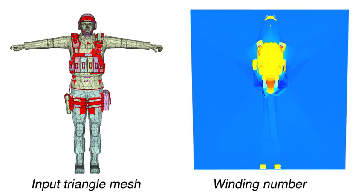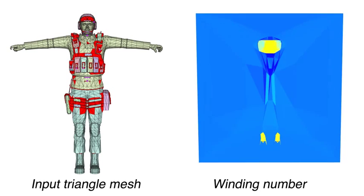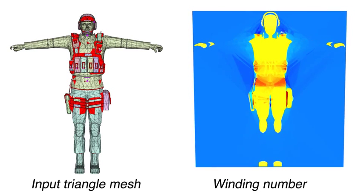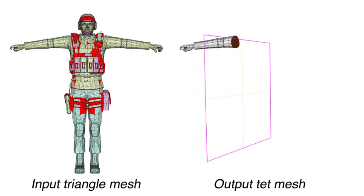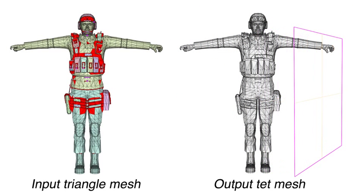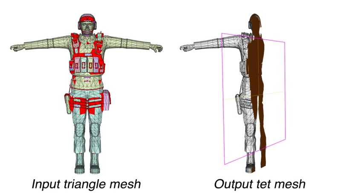We robustly determine inside from outside by generalizing the winding number for arbitrary triangle meshes. Relying on the unique properties of this function, we segment a constrained Delaunay tessellation, CDT, to recover the shape's volume, exactly meeting the input mesh.